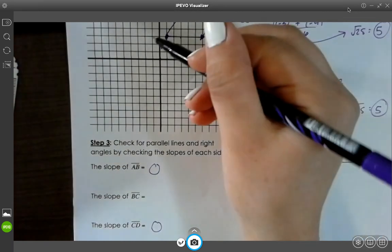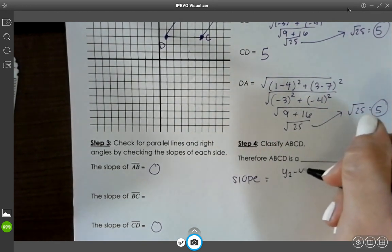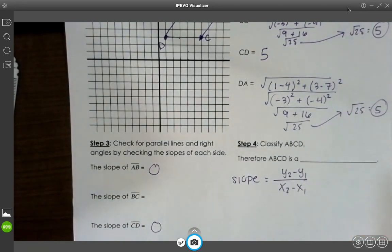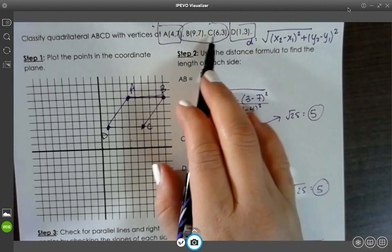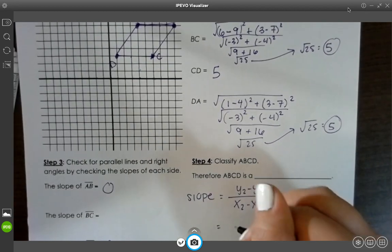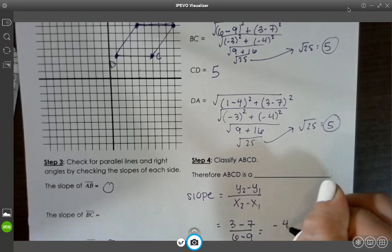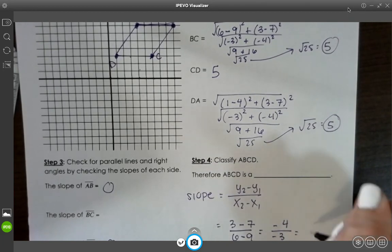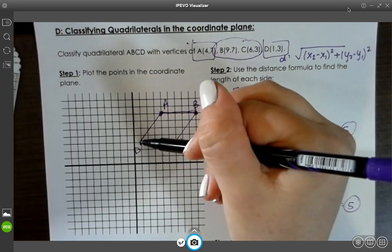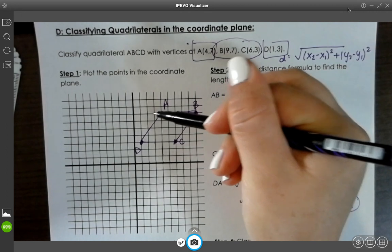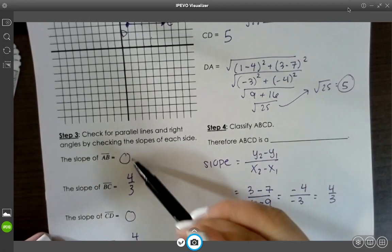Now if you want to find the slope without counting, you can use the slope formula, which is y2 minus y1 over x2 minus x1. So for example, if I'm doing BC, I'm going to look at these numbers for B and C. y2 minus y1 over x2 minus x1. I get negative 4 over negative 3, which is positive 4 over 3. Or you can just count. So I'll count for DA. 1, 2, 3, 4. 1, 2, 3. So that's positive 4 over 3. So these are not perpendicular.